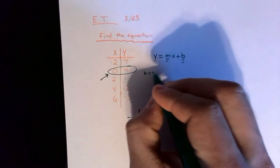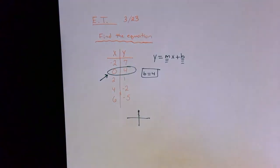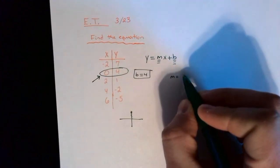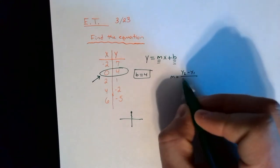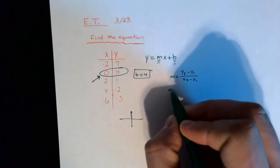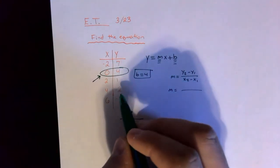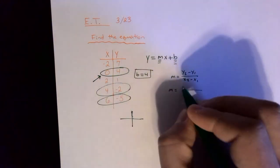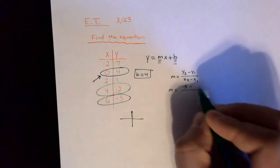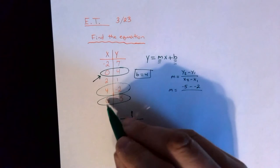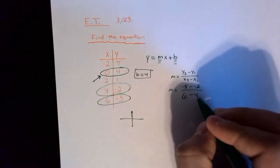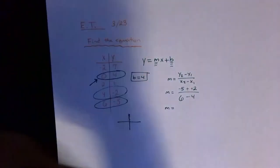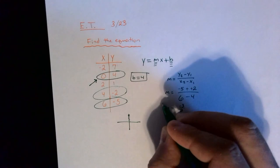Now I just have to find m, and m is the change of y over the change of x. You can use the formula y₂ minus y₁ over x₂ minus x₁ and pick any two points. There are some negatives here so it's a little tricky — y₂ is negative 5, minus y₁ is negative 2, and x₂ is 6 minus x₁ which is 4. Using keep-change-change or your calculator, m equals negative 3 over 2.